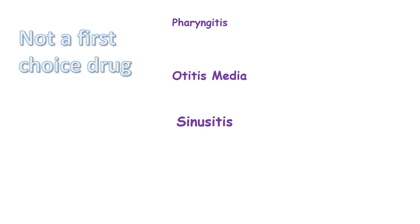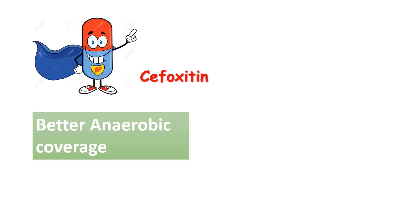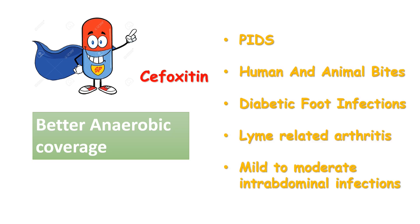The clinical use of second generation cephalosporins is similar to the first generation, and they are not always the first choice. They are used in cases of otitis media, pharyngitis, and sinusitis. Because of their anaerobic coverage, cefoxitin is used prophylactically in multiple surgeries including cardiac, biliary, appendectomy, small intestinal, head and neck, urological, and hysterectomy procedures. Cefoxitin can also be prescribed for pelvic inflammatory disease, human and animal bites, diabetic foot infections, early Lyme disease or Lyme-related arthritis, and mild to moderate intra-abdominal infections.